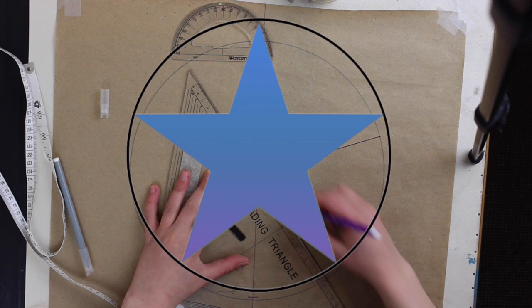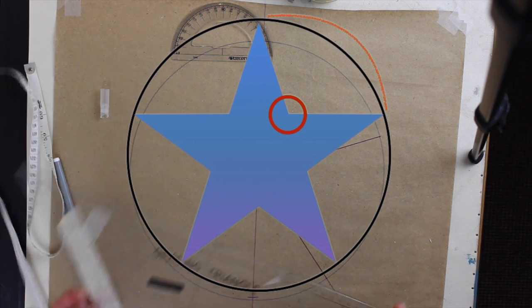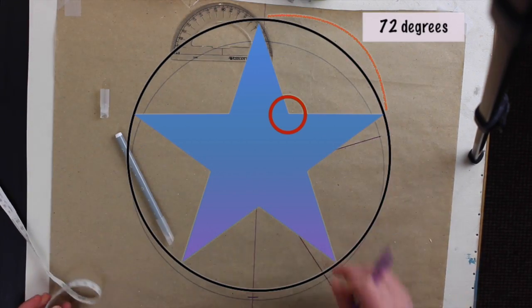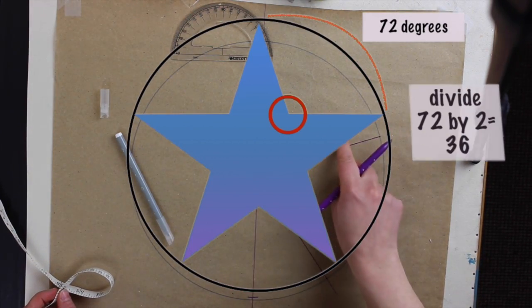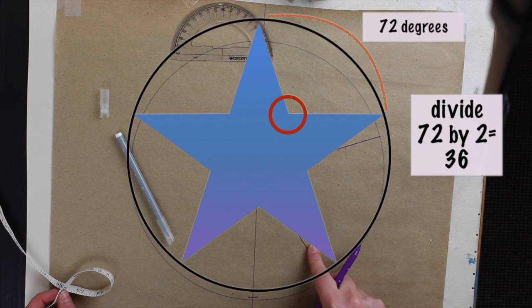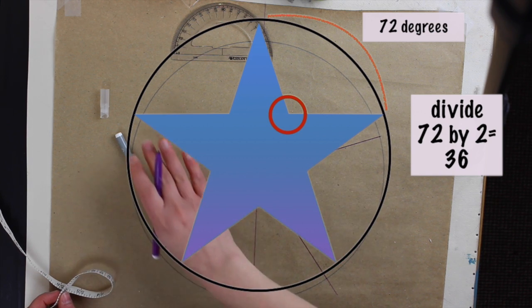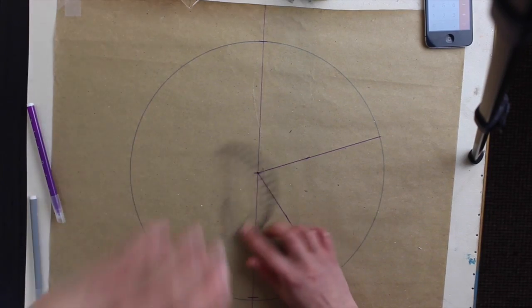Alright, so next thing we need to figure out is how deep you want each point to be. So we know that in between each point there is 72 degrees. So all we need to do is divide 72 by 2 and you will have 36 degrees.